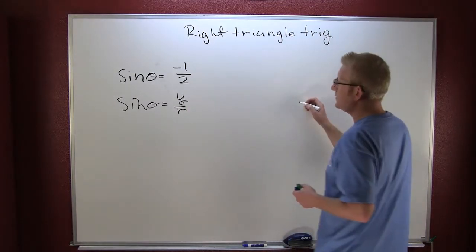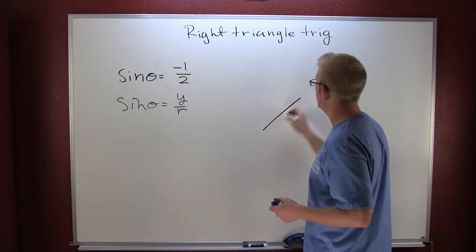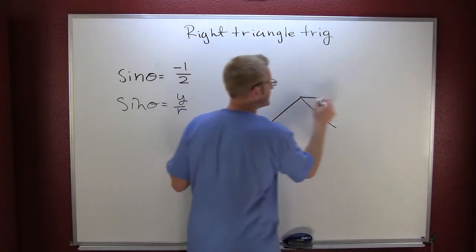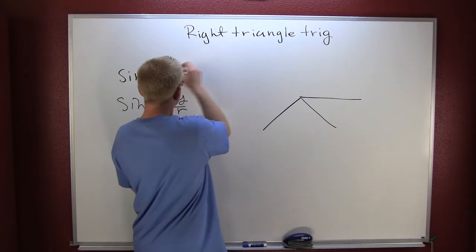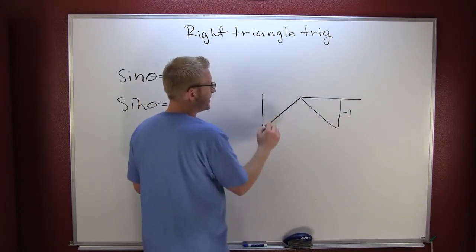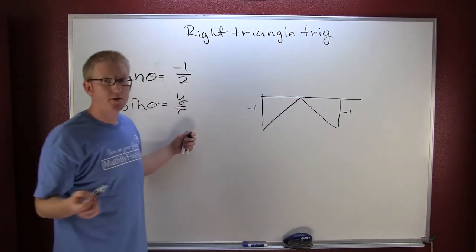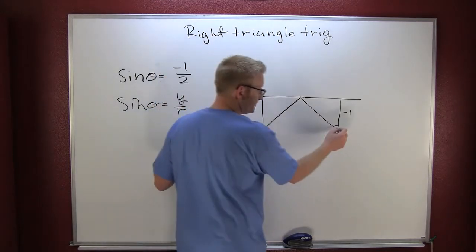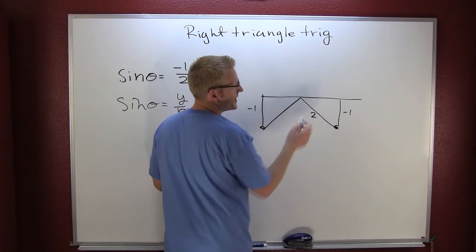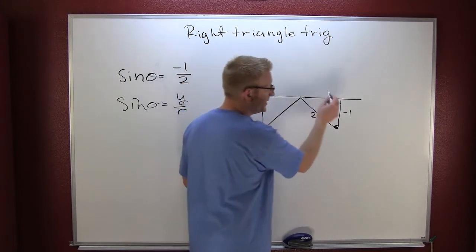If I was going to draw that, my radius is positive and my y is negative. So there are two places where that can happen on our unit circle. This is going to give me a y of minus 1, and this is going to give me a y of minus 1 on our reference triangles. So there are a couple of different places where this can happen. These are right triangles, so I guess you could go and find those guys.